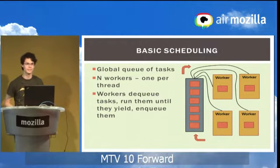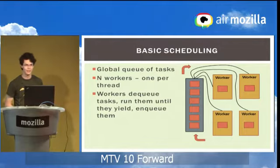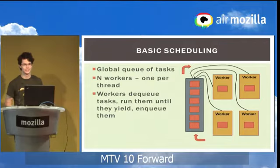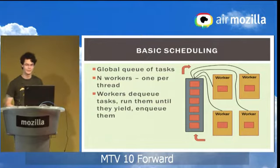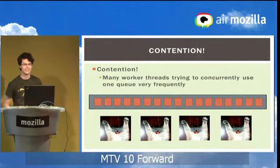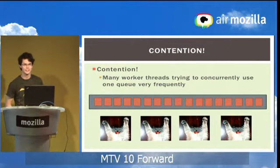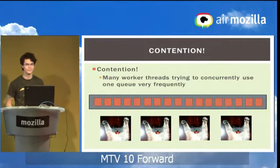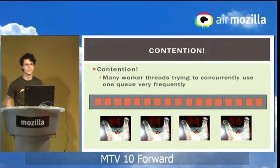The most basic type of scheduling you can do is take a giant global queue of tasks to work on, make a bunch of workers — probably one per CPU thread — and then have those workers take tasks off the queue, run the tasks, and put the tasks back on the queue. Very straightforward. The problem is contention. This doesn't usually work out very well. You have a lot of threads trying to use this queue, using both ends all the time, so they spend lots of time fighting with each other and you get very bad performance. The queue frequently fills up and doesn't drain very fast.